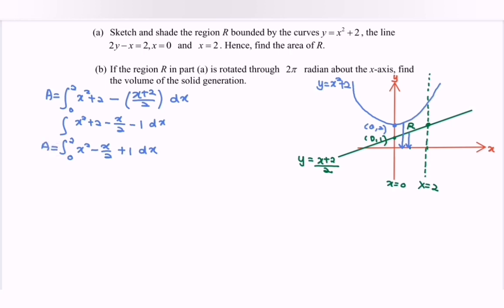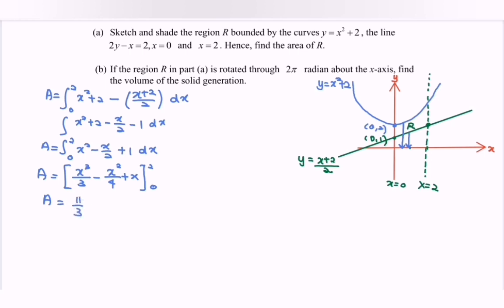Integrating: [x³/3 − x²/4 + x] from 0 to 2. Substituting x = 2 gives 11/3; substituting x = 0 gives 0. So the area is 11/3 square units.